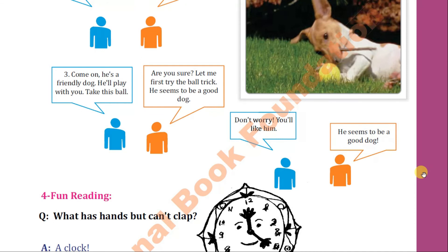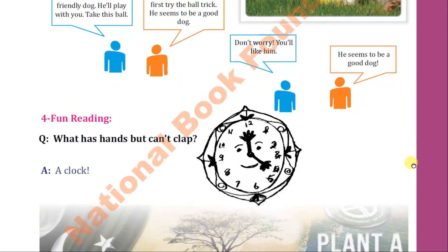Then we come to fun reading. You can see a picture of a clock. The riddle is: 'What has hands but can't clap?' It is a clock — the needles in a clock are called hands, which is why a clock has hands but obviously it can't clap.